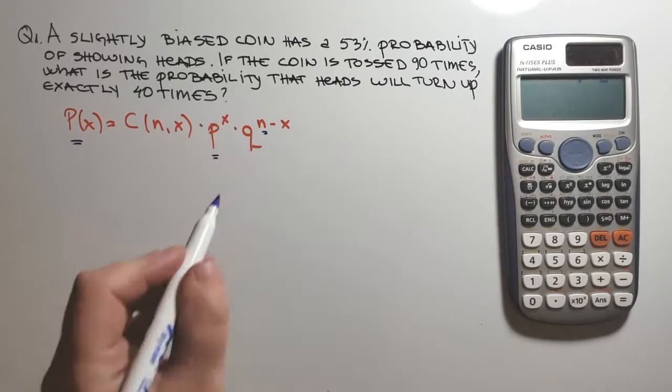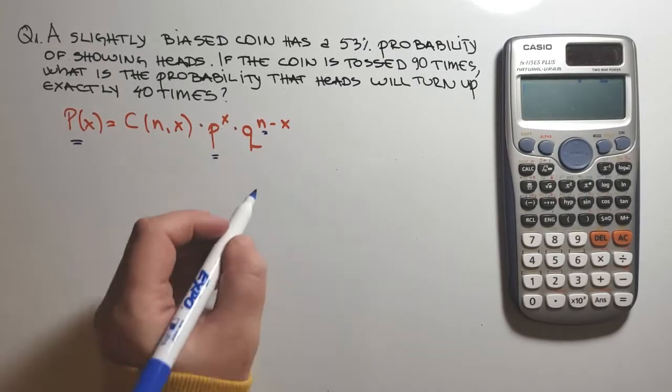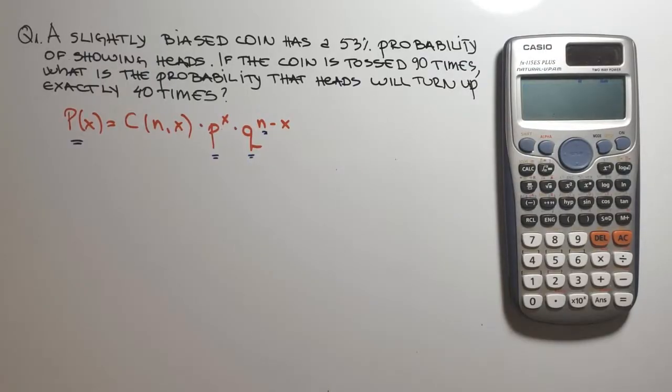N is the number of trials, and Q is the probability of failure and that equals to 1 minus P.